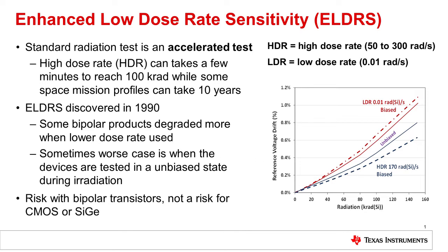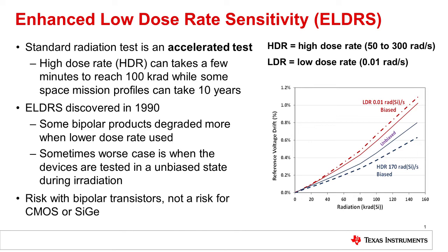If the product does not show significant difference, the part is considered ELDRS-free, and the RLAT testing can be done at either high or low dose rate, depending on how the supplier approaches the problem. I pulled three images from our radiation handbook for different bipolar devices, and as you can see, for the specified datasheet parameter on the x-axis, the chart highlights how much the spec varies over different radiation dose rates and exposure times. This clearly highlights the importance of understanding the underlying details of the radiation report, specifically for bipolar parts.